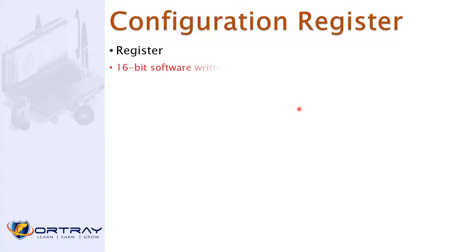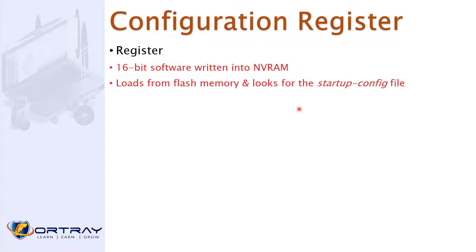The configuration register value is a 16-bit value written into NVRAM. It determines whether the router loads from flash and looks for the startup configuration. We will now look at the actual default value of this register on a router.